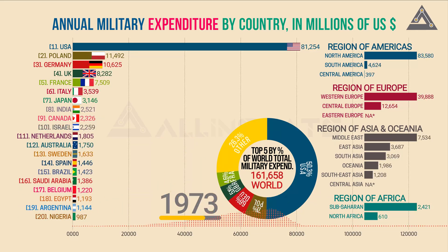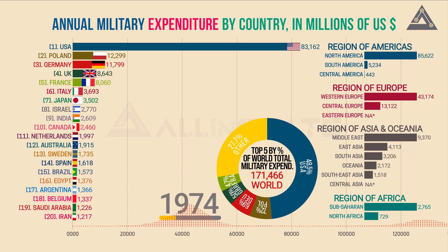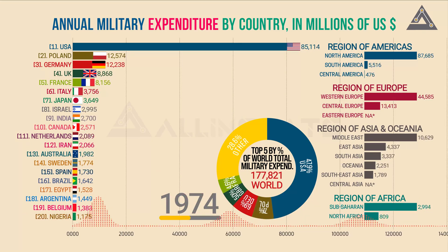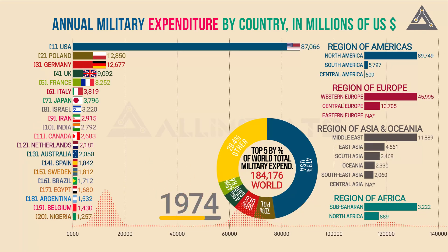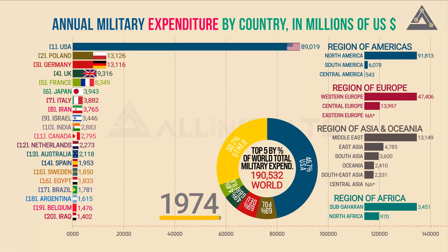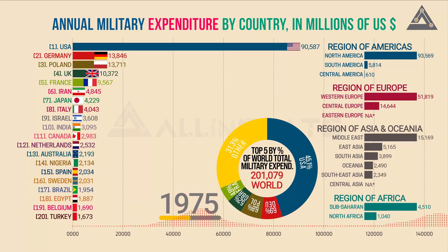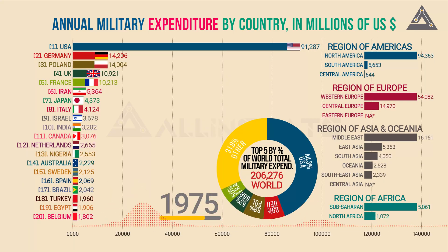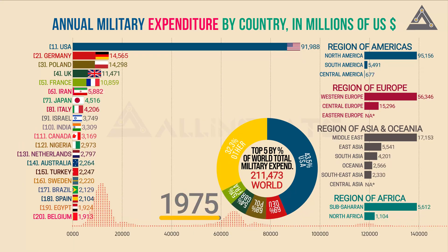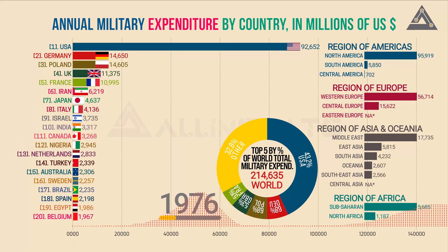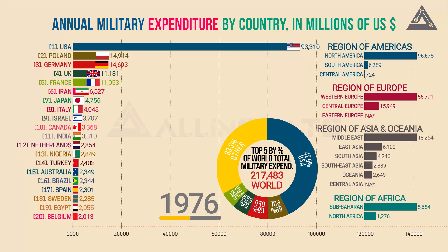In Iraq, it is estimated that the size of the armed forces in 1991 was almost 8% of the population, or the equivalent of about 35% of the entire labour force of the country.